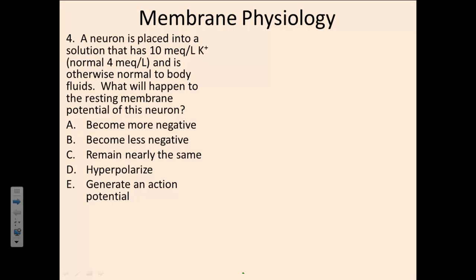Today we're going to be looking at number four in the membrane physiology practice problems. In this problem, we have a situation where a neuron is being placed in an abnormal solution. Normally, the extracellular fluid would have a potassium concentration of 4 milliequivalents per liter, but here we're putting the neuron in a solution with 10 milliequivalents per liter. We want to determine what would happen to the resting membrane potential. This problem seems simple at first, but solving it requires understanding concentration gradients, membrane potentials, and action potentials.